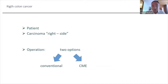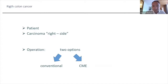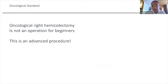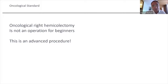You can do it the conventional way, just taking the ileocolic vessels somewhere, or you can try to be oncologically optimal and do the CME. Therefore, we have to state that this procedure is now not an operation for beginners. When I was a resident, the open right hemicolectomy was the first big procedure every young surgeon learned. Now the laparoscopic right hemicolectomy is an advanced procedure.